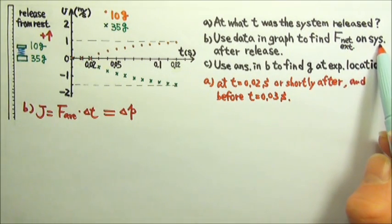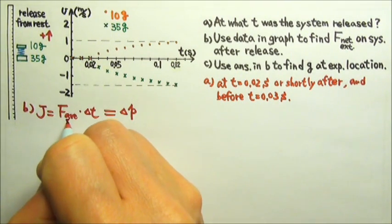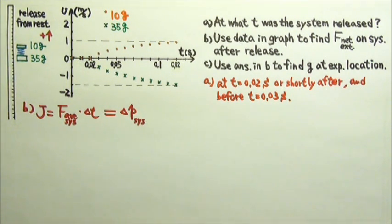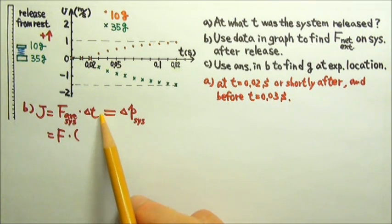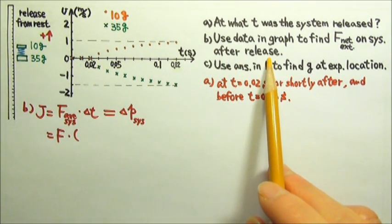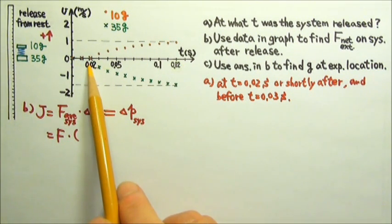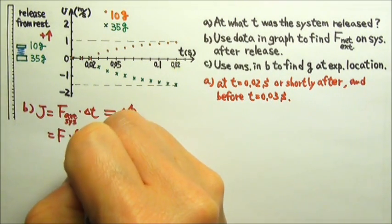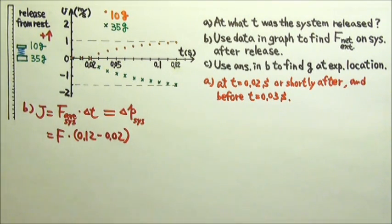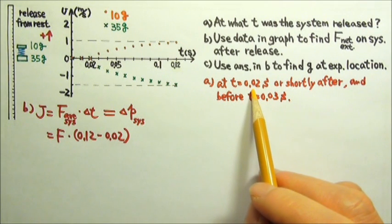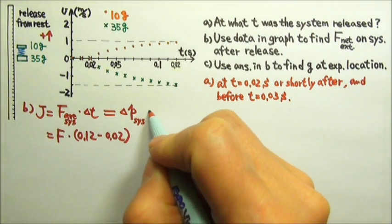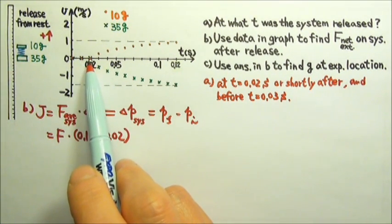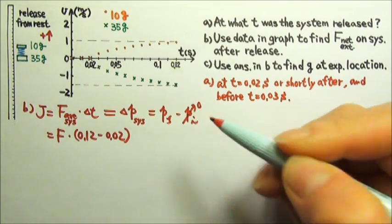Because we want to find the net external force on the system, this has to be the change in momentum of the system. We're looking for the force, and the time duration after the release for the data we have is from 0.02 seconds to 0.12 seconds. So delta t is 0.12 minus 0.02, assuming that the release happens at t = 0.02 seconds. And delta p is final minus initial. Initially, both blocks are at rest, so the initial momentum of the system is 0.